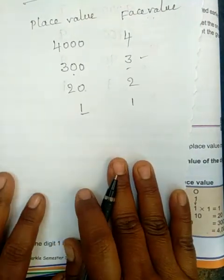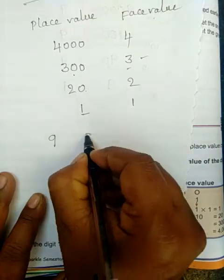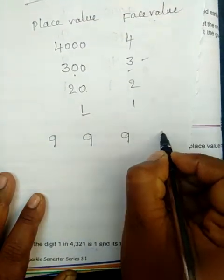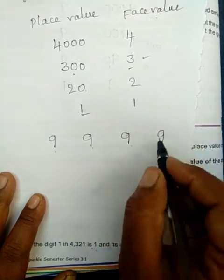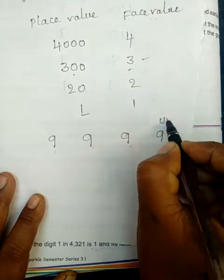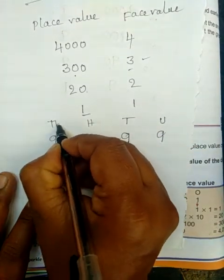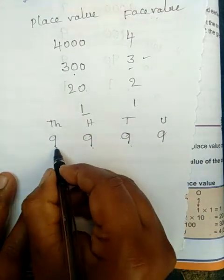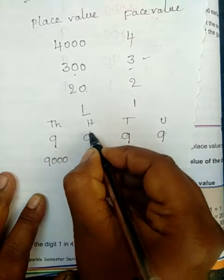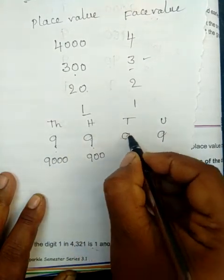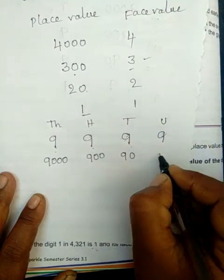If you have any confusion, let's take the greatest 4-digit number, that is 9,999. This 9 is in the units place, this 9 is in the tens place, this 9 is in the hundreds place, and this 9 is in the thousands place. The place value of 9 in the thousands place is 9000; in hundreds it is 900; in tens it is 90; and in ones it is 9.